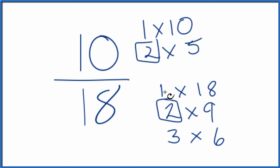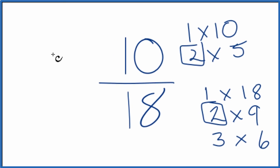So if we divide 10 by 2 and 18 by 2, we'll have simplified the fraction 10 18ths. Let's move this over here.